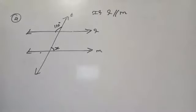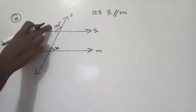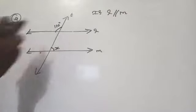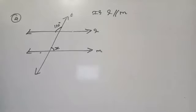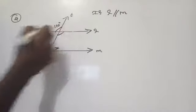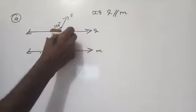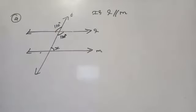If it is 110 degrees, can you find the value of this angle? Yes, it is also 110 degrees. What is the reason here? Vertically opposite angles are equal. If two lines intersect at a point, then the vertically opposite angles are equal.